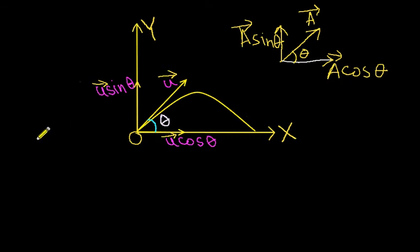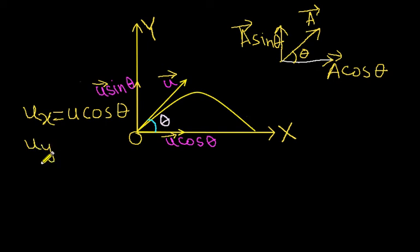Similarly, the velocity with which the particle started moving was u. As it makes an angle theta with the x-axis, the component of velocity along the x-axis is u cos theta, and the component of velocity perpendicular to the x-axis is u sin theta. So, u_x equals u cos theta and u_y equals u sin theta.